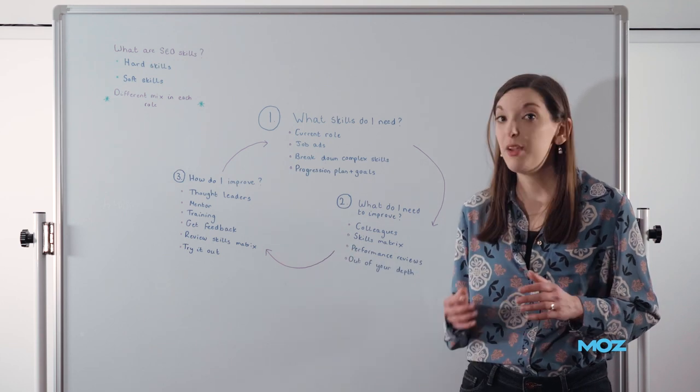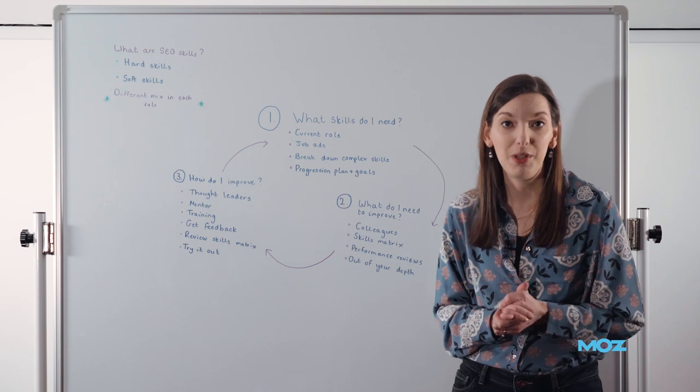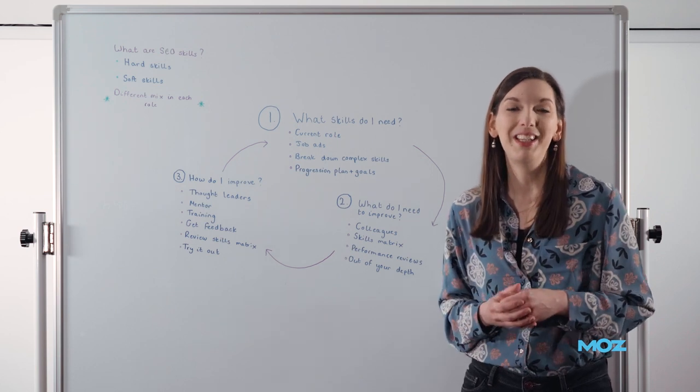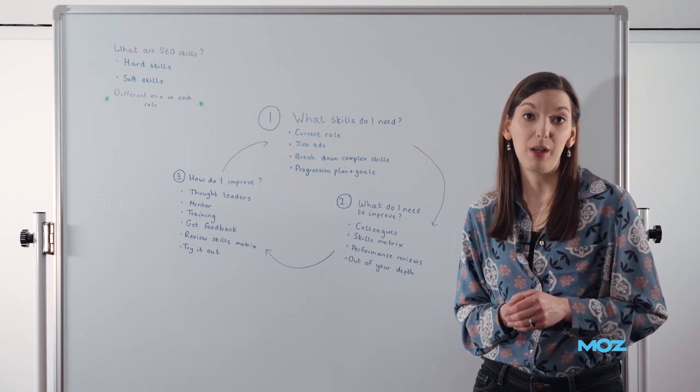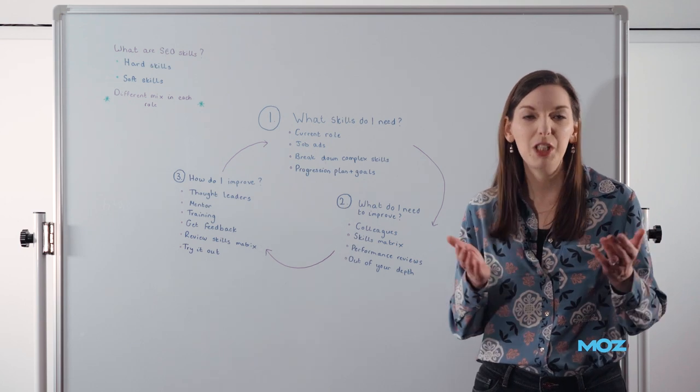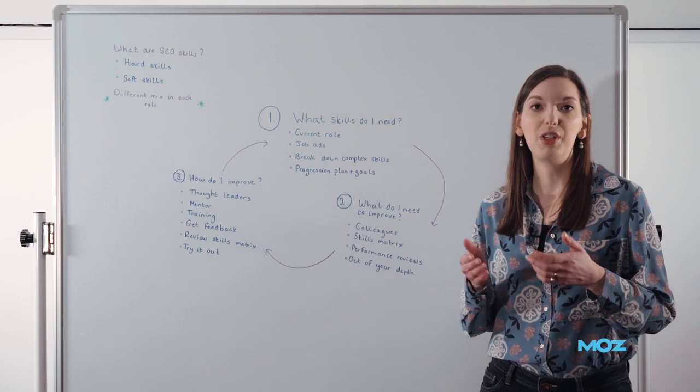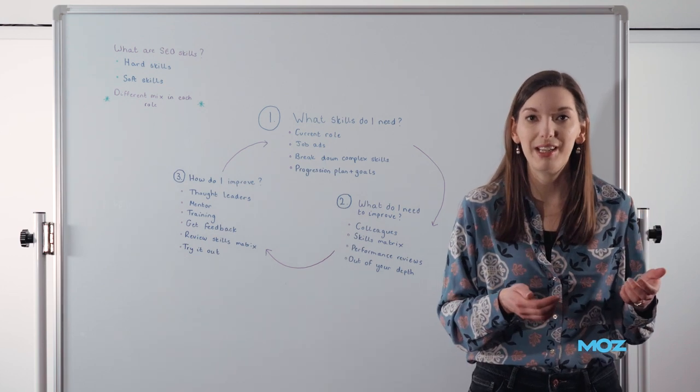Training. We've all been promised these amazing training budgets when we sat in job interviews. Let's actually use them. So find yourself some training courses that are really specific to the skills that you're looking to develop. Don't just go on sort of generic SEO ones, but if it's stakeholder management, find a course that covers that. Or if it's public speaking, find a course that covers that.